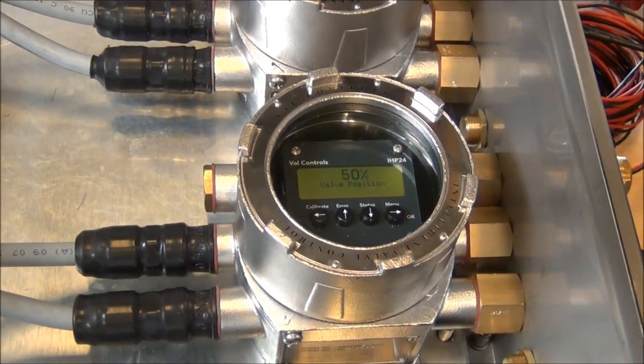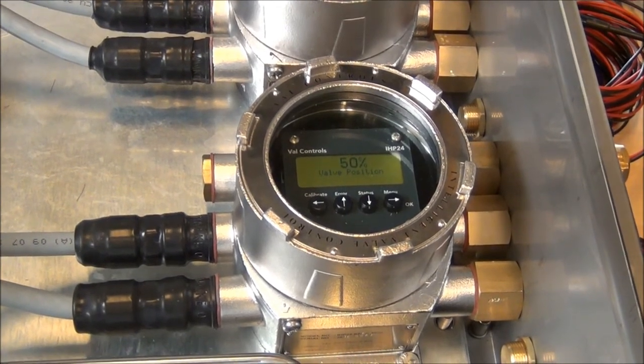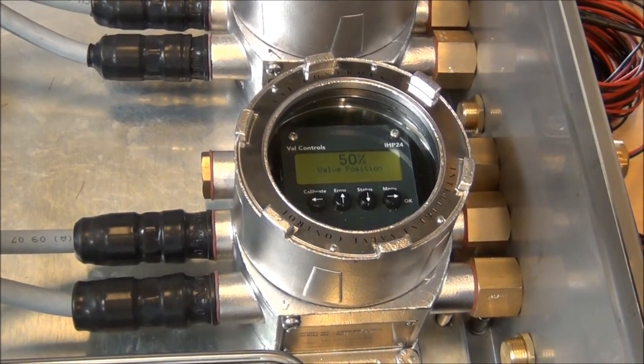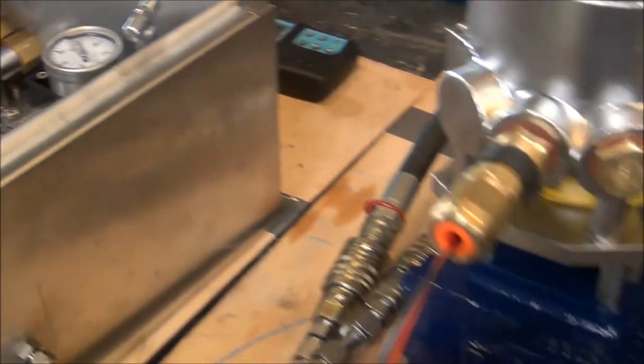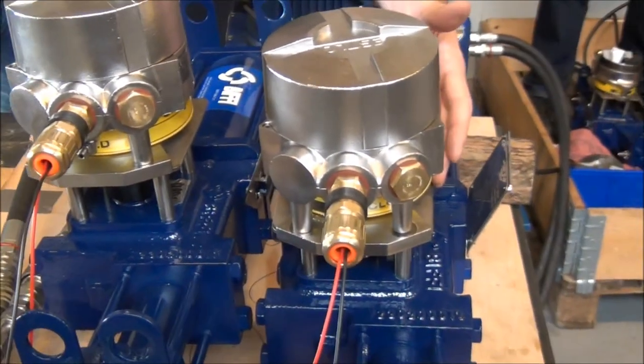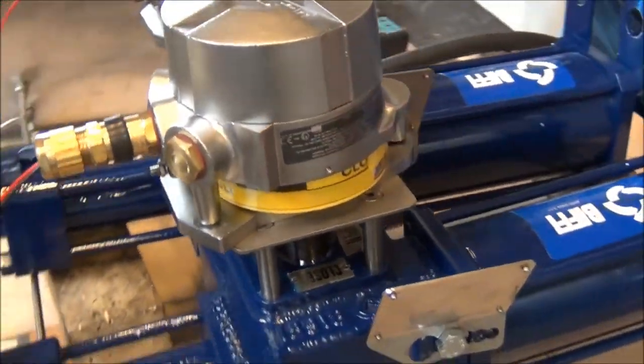As you can see on the display, the actuator has moved to 50%. Now we'll look at the position transmitter. If we go around and look at the side here, you can see the movement.